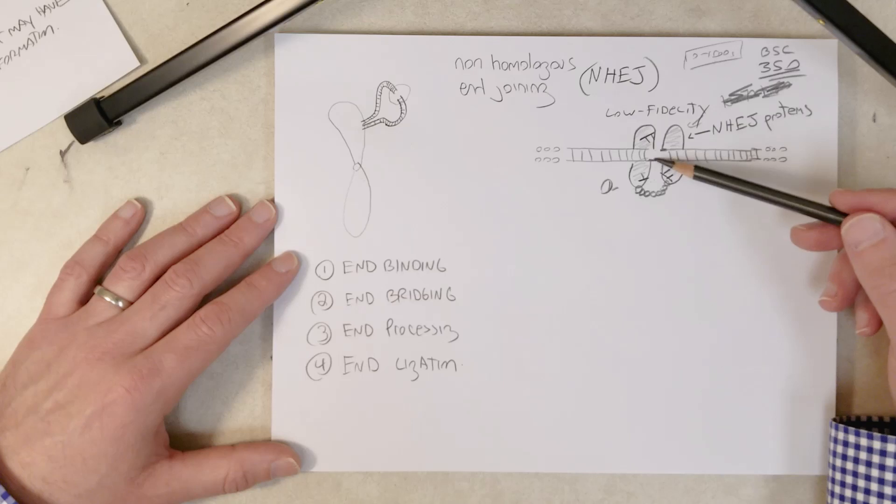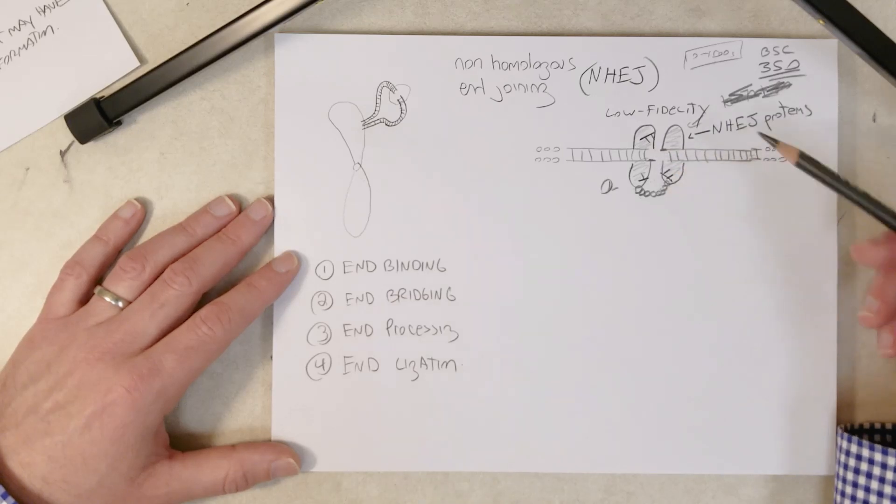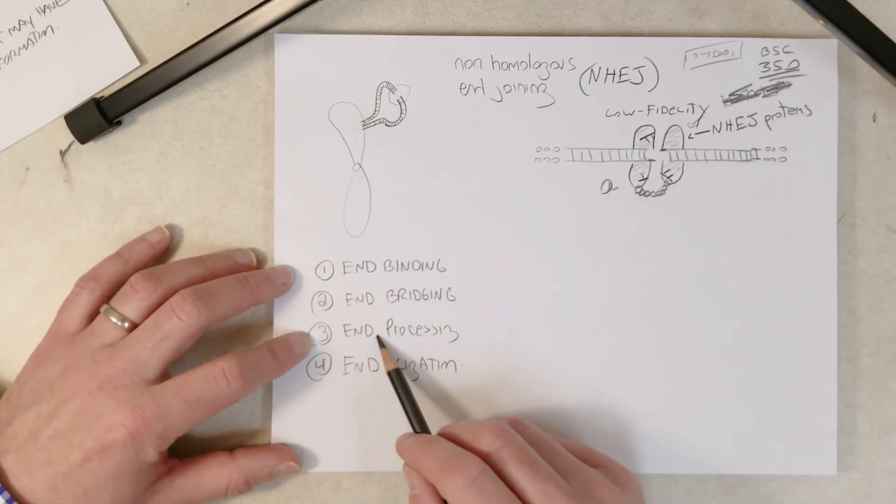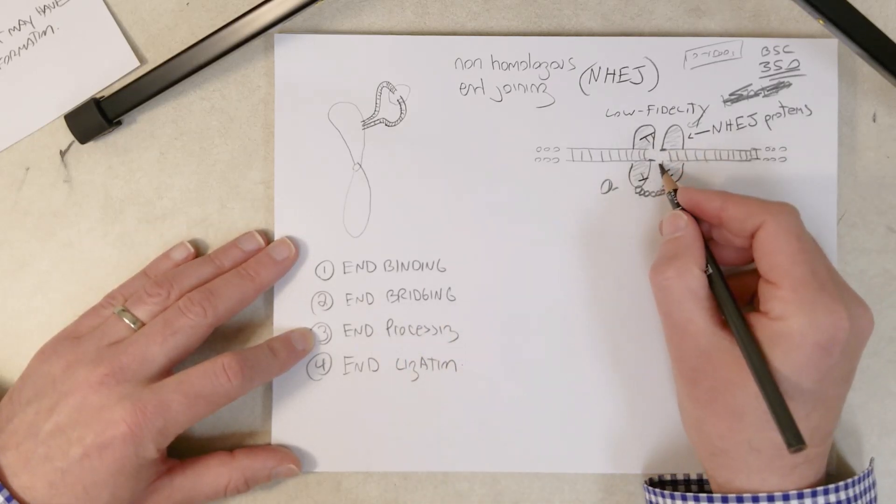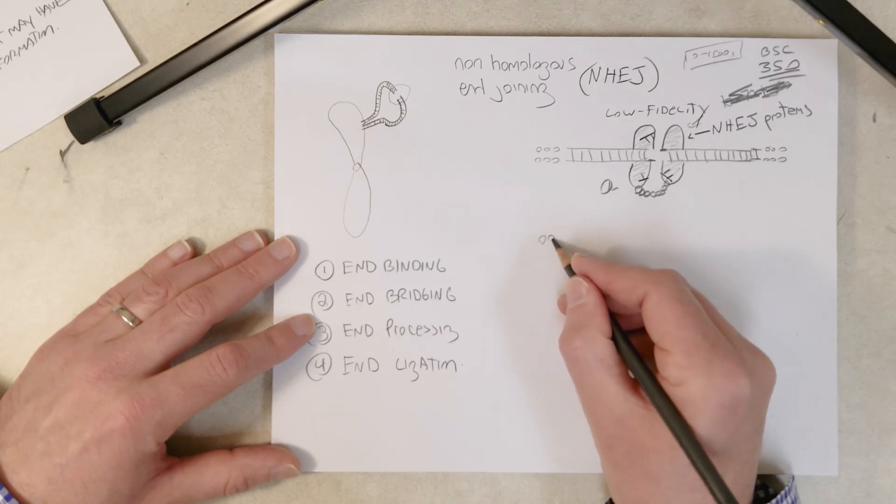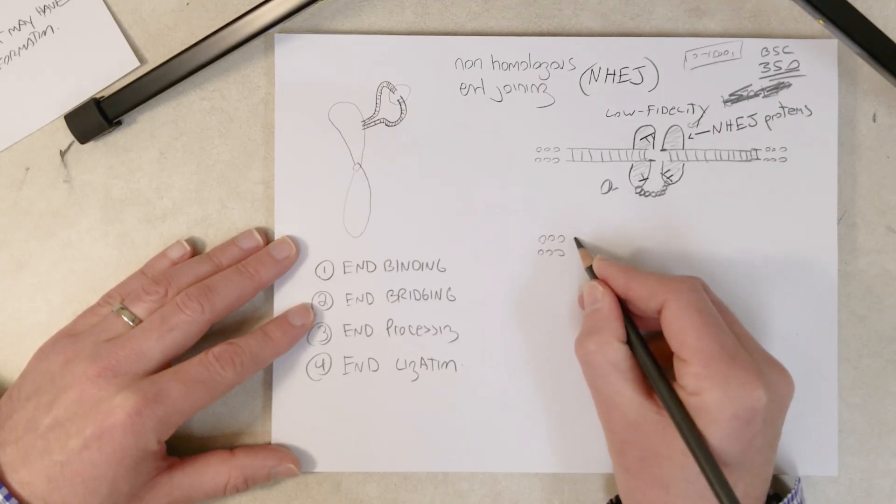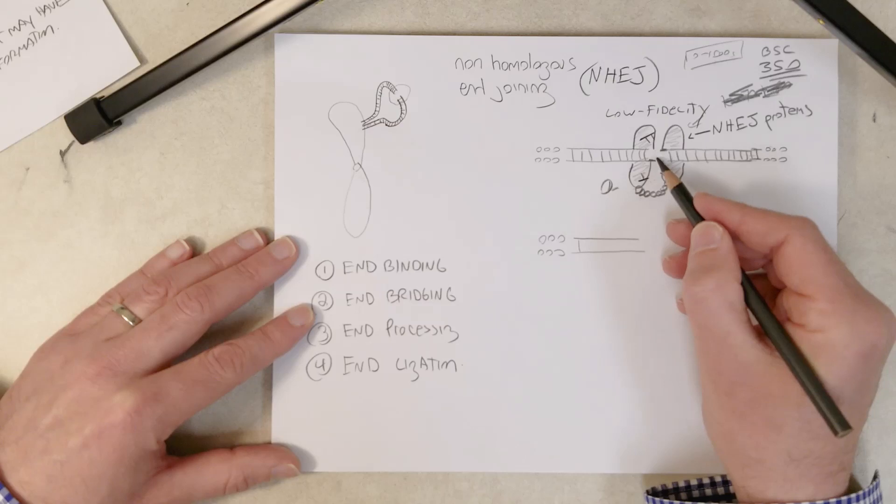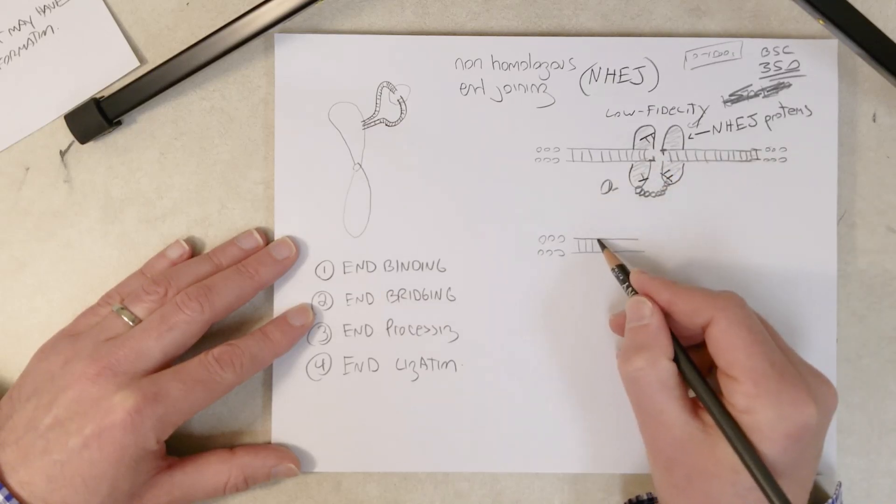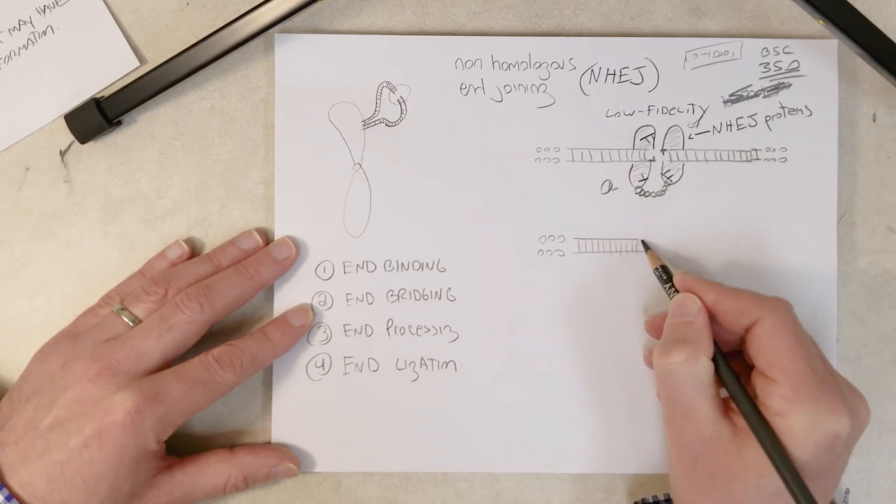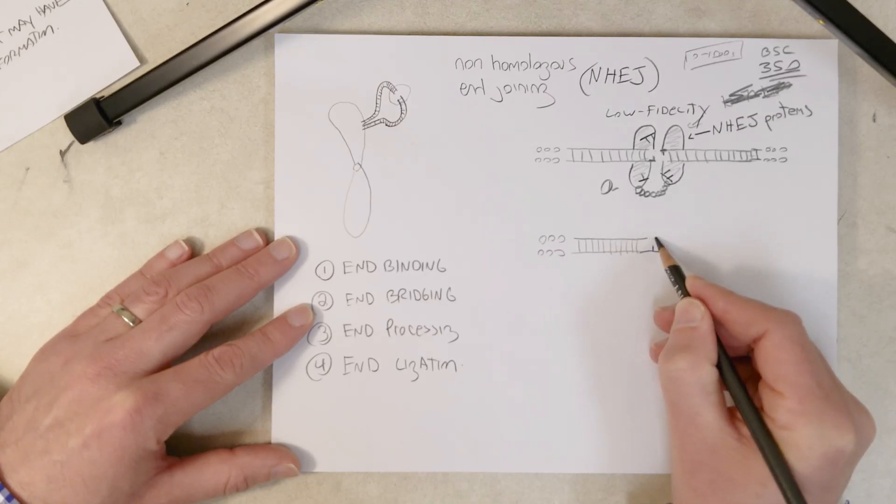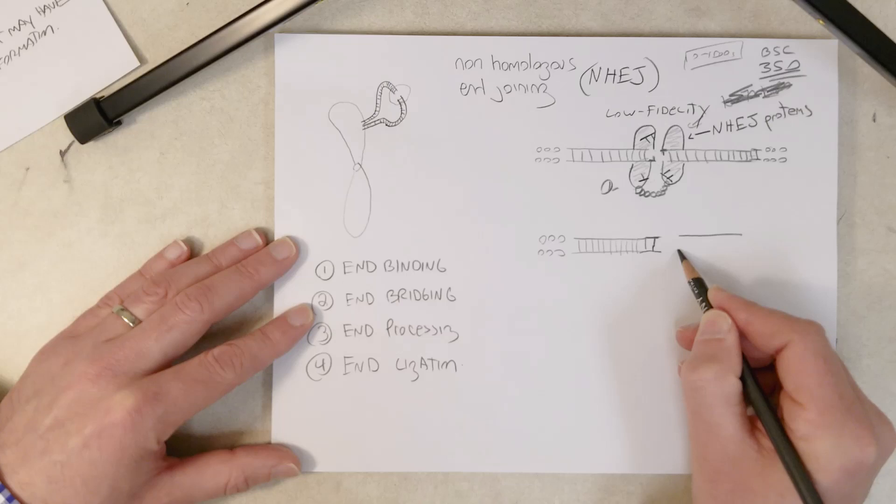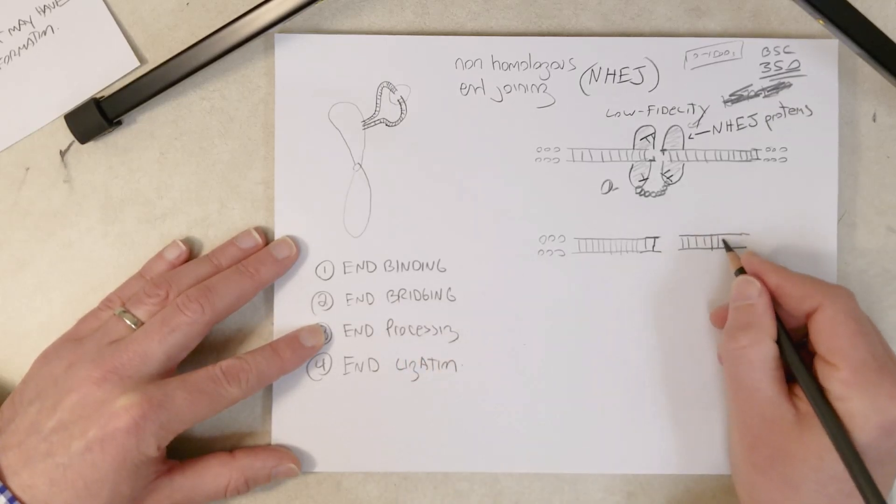Okay, the third step: end processing. So before these can be stuck together, the ends need to be polished. What do I mean by polish? So see I have these little overhangs here? Well, those need to be trimmed away. And if they aren't trimmed away, then the other thing that can happen is we can add a base up here. A DNA polymerase can come in and add a base. So we're going to make these blunt ended, so no overhangs, so nice blunt ends. And that's going to be called end processing.